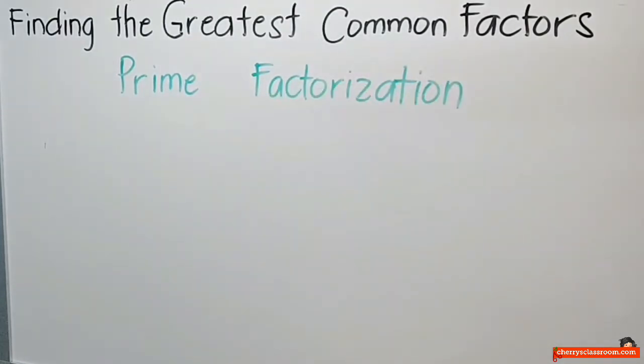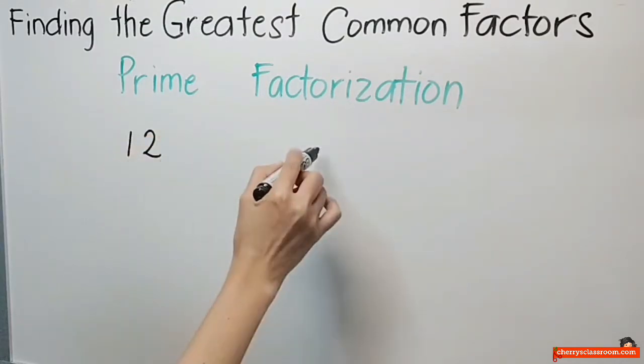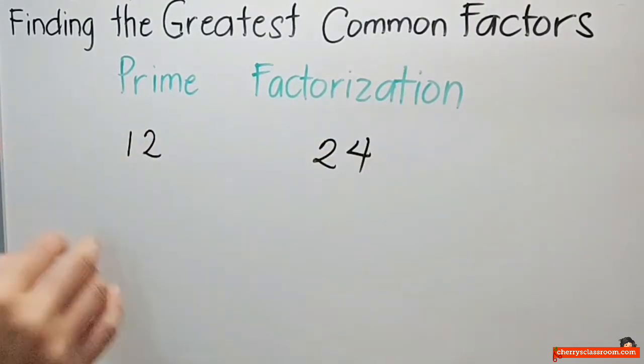Prime factorization. Ang greatest common factor ng 12 at 24 ay 12. Ngayon, tingnan natin sa prime factorization. Data 12 pa rin ang sagot. Isusulat mo muna 12 at 24. So, aalamin mo ngayon ang prime factors ng 12 at 24. So, unahin muna natin ang 12.